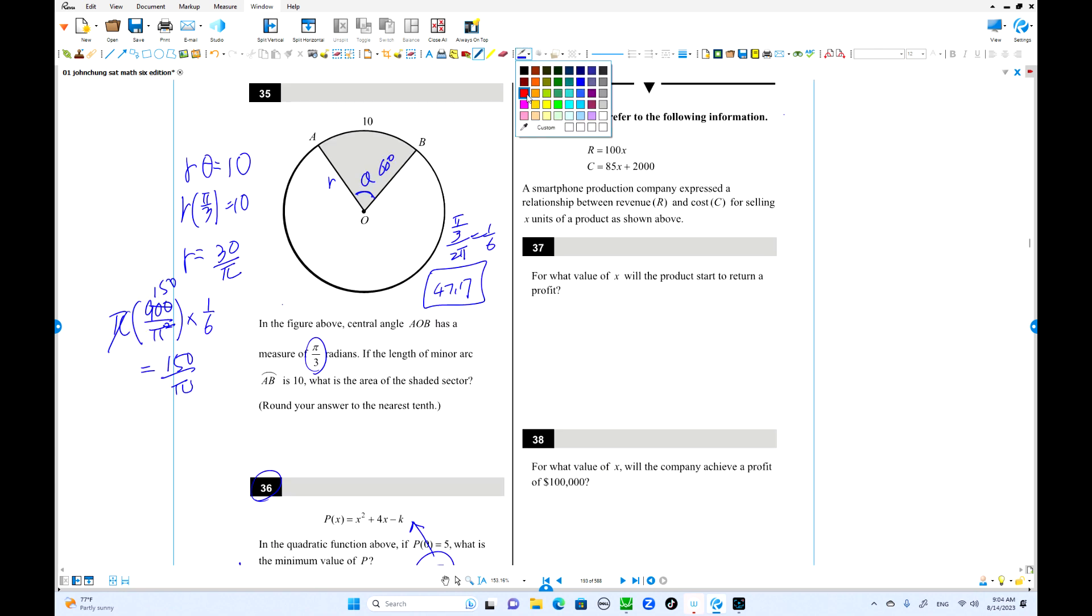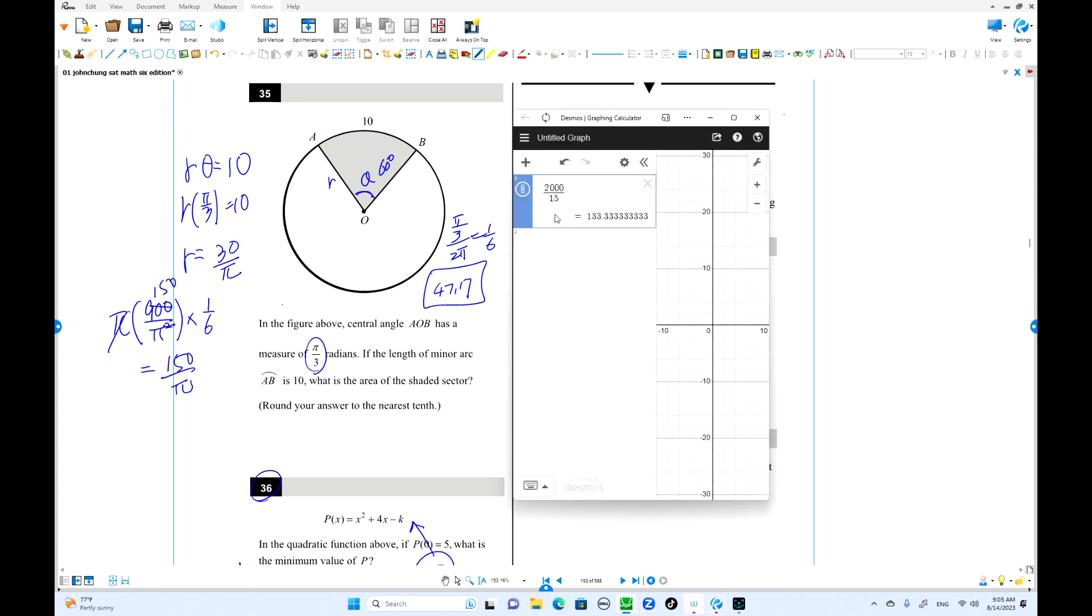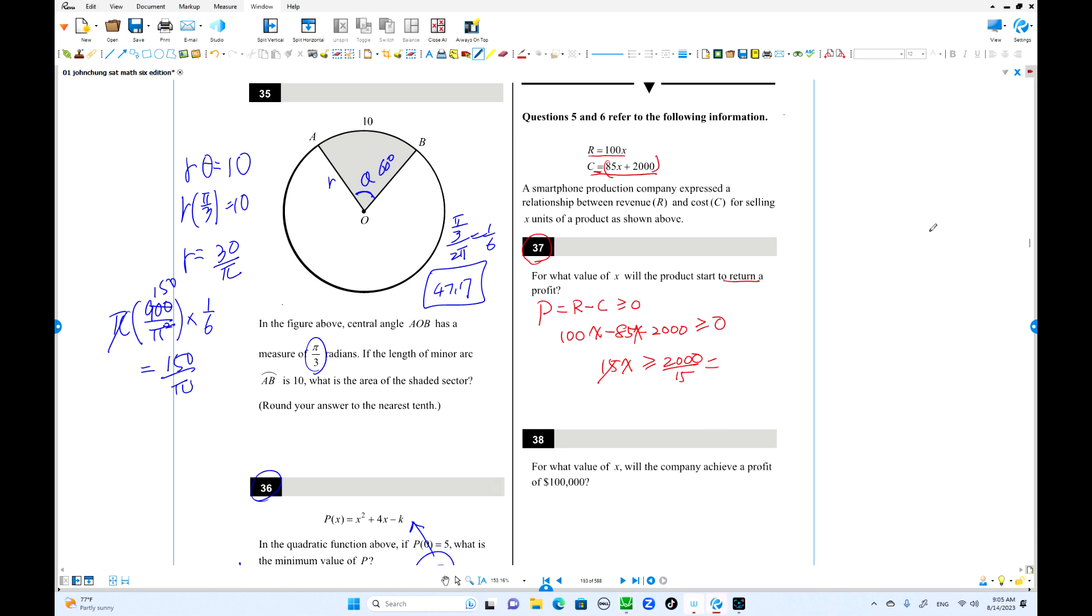Problem 37: Revenue and costs are given by equations. Profit is R minus C. For profit, this must be greater than or equal to zero. So 100x minus (85x + 2000) is greater than or equal to 0. That's 15x greater than 2000. Divide by 15: x is greater than or equal to 133 point something. Since x must be an integer, the answer is 134 units.